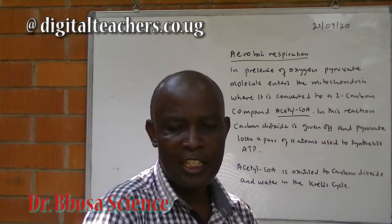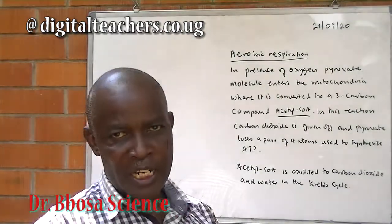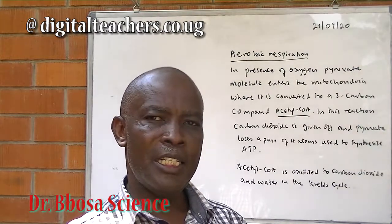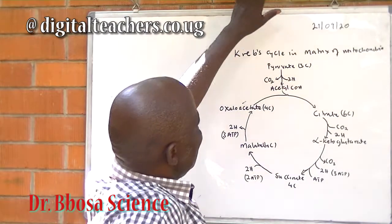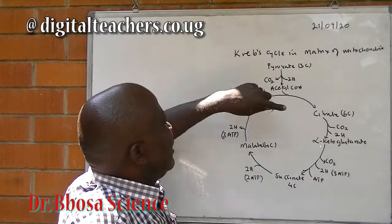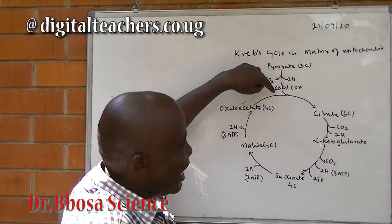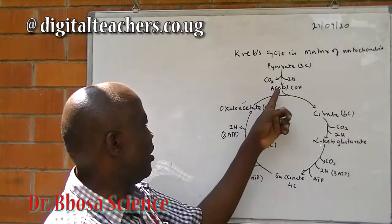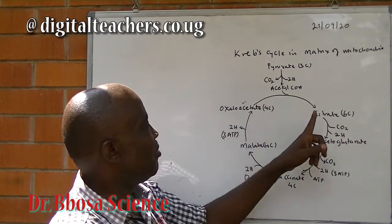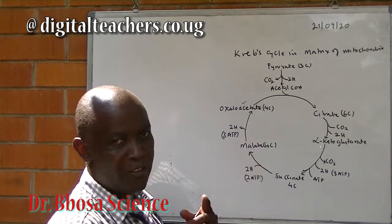Acetyl-CoA is oxidized to carbon dioxide and water in the Krebs cycle, also called the tricarboxylic acid cycle or citric acid cycle. The Krebs cycle occurs in the matrix of the mitochondria. Before pyruvate enters the Krebs cycle, it first loses carbon dioxide and two hydrogen atoms to form Acetyl-CoA. Acetyl-CoA reacts with oxaloacetate to form citrate, which is a six-carbon compound. Oxaloacetate is a four-carbon compound.